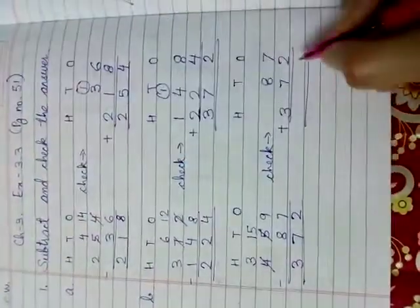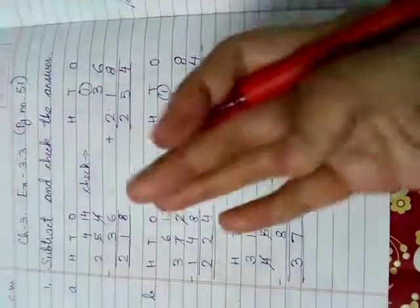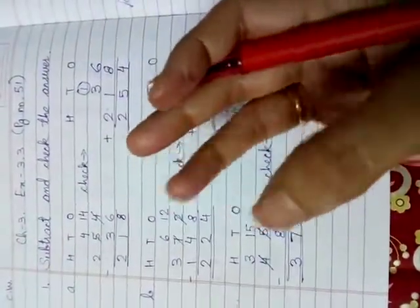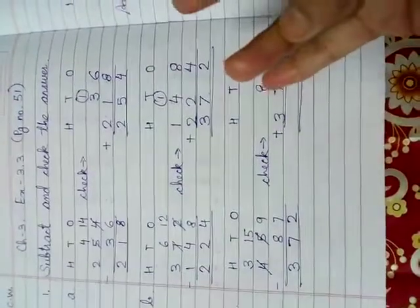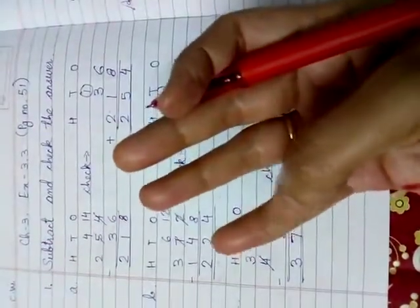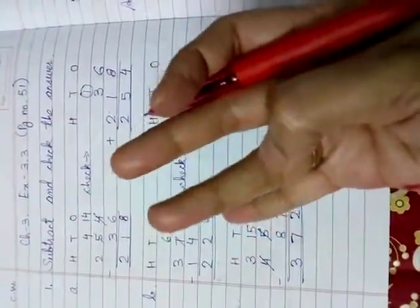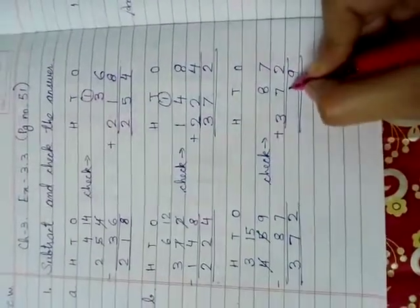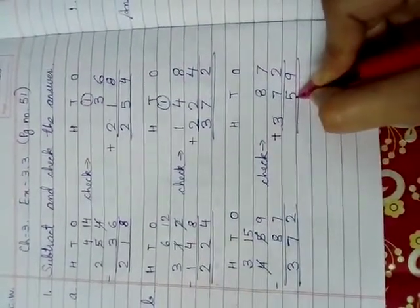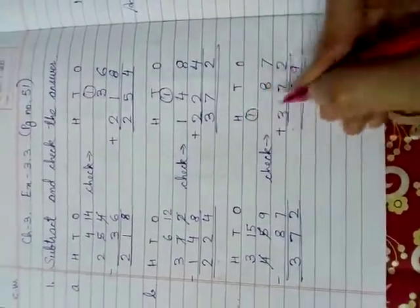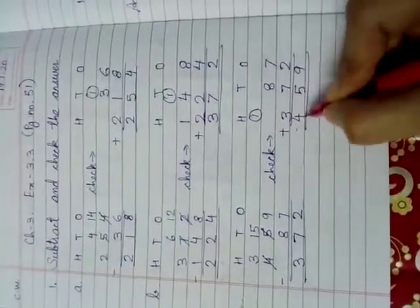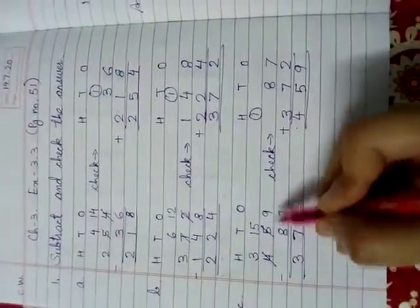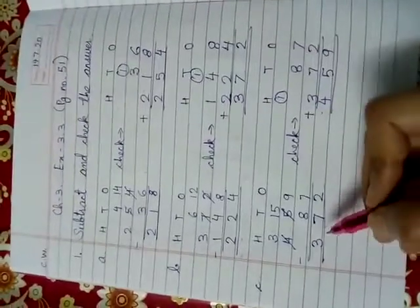8, 9. 8 plus 7. Where is 7? 1, 2, 3, 4, 5, 6, 7. Here. So, count after 8. 9, 10, 11, 12, 13, 14, 15. 15 cannot be written whole. So, 15, 5. And 1 carry. 1 plus 3 is 4. 459. 459. It is matching. That means the answer is correct.